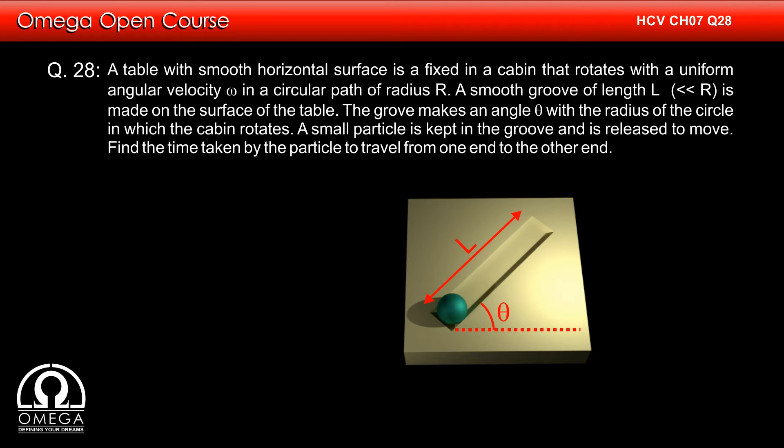A smooth groove of length L is made on the surface of the table. The groove makes an angle theta with the radius of the circle in which the cabin rotates. A small particle is kept in the groove and is released to move. Find the time taken by the particle to travel from one end to the other end.